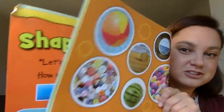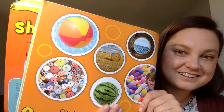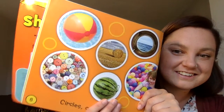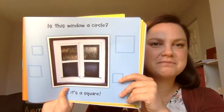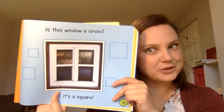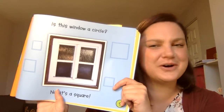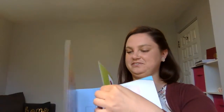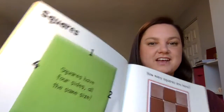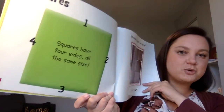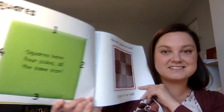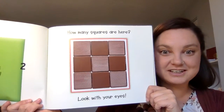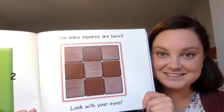Look at all of these types of circles. Is this window a circle? No, it's a square. Squares have four sides, all the same size. How many squares are here? Look with your eyes — let's see how many squares are in this picture.